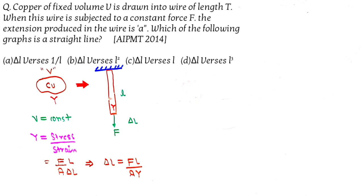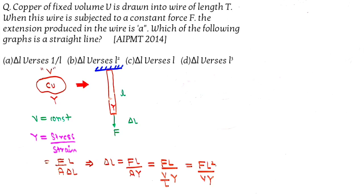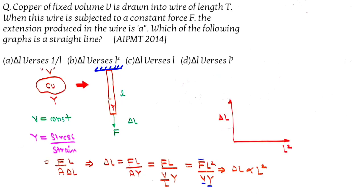Area can be written as volume by length, so delta l equals f into l divided by volume by length into Y, that is f l squared divided by volume into Young's modulus. Since force is constant, delta l is directly proportional to l squared. This means a graph of delta l versus l squared will be a straight line, and that is the answer.